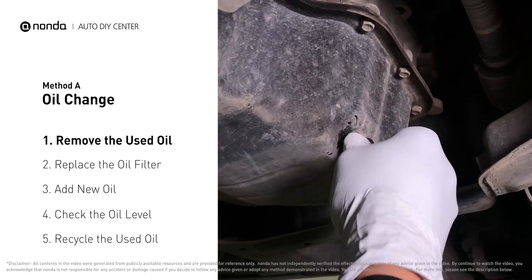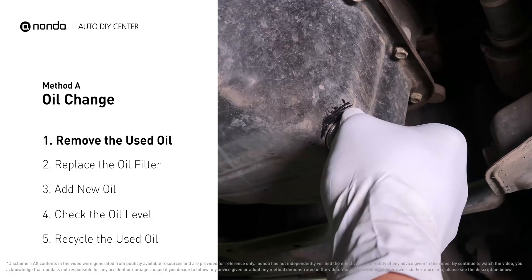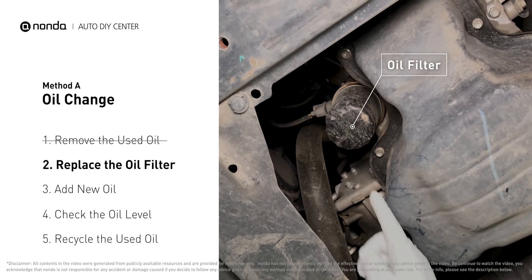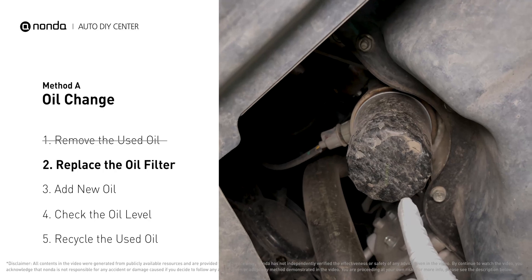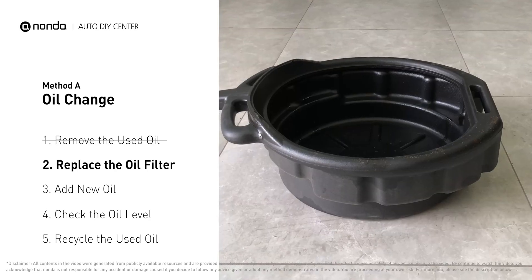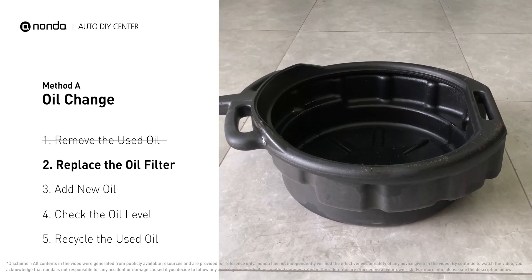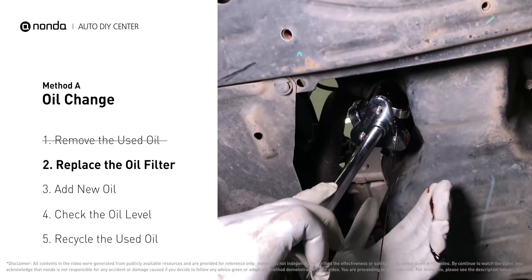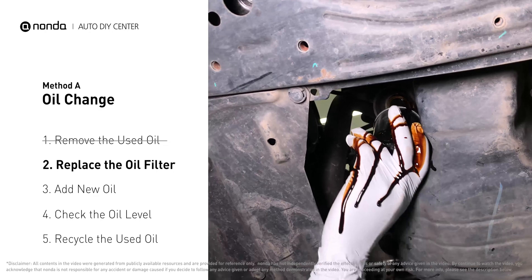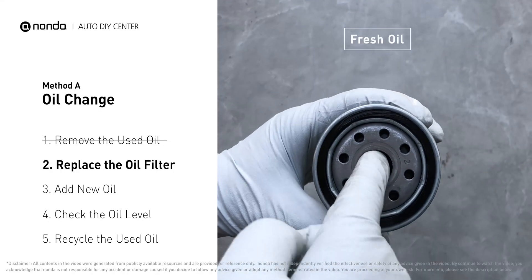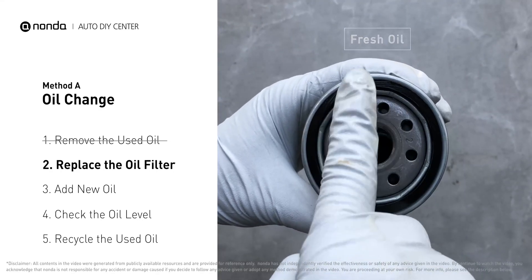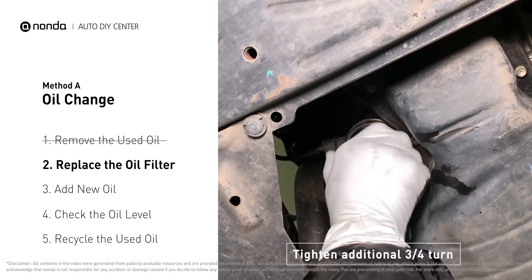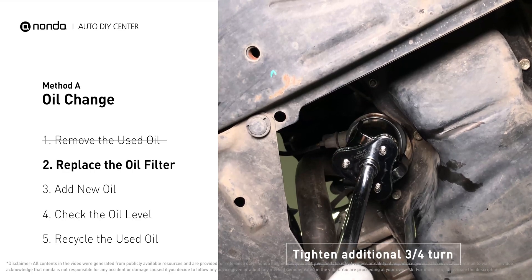The oil filter is usually located beside the oil pan or under the hood of your vehicle near the engine. Place the collection pan under the filter — there will be oil in the filter itself that could be hot, so it is important that the oil goes into the collection pan. Spread a bit of fresh oil evenly on the new filter's gasket, then install the new oil filter and tighten it an additional three-quarters of a turn. Be sure not to over-tighten.